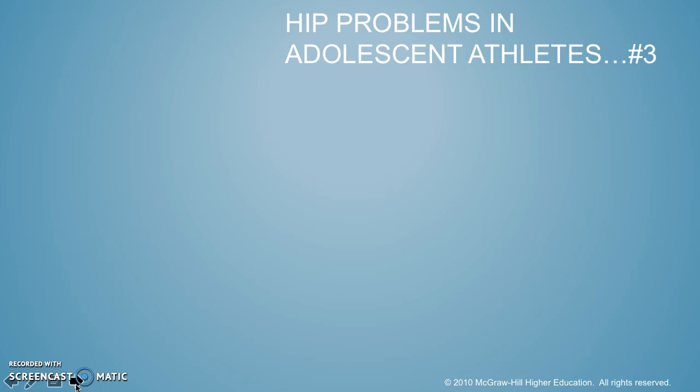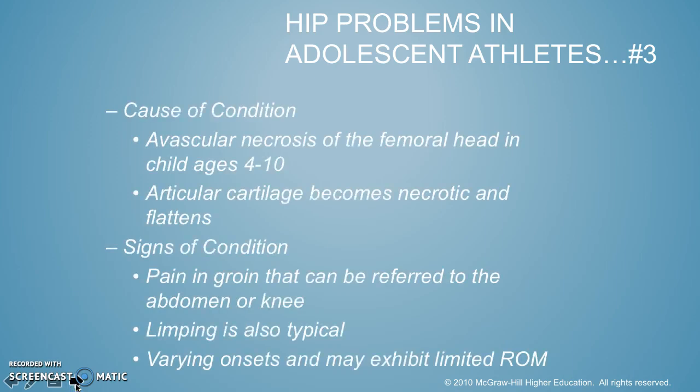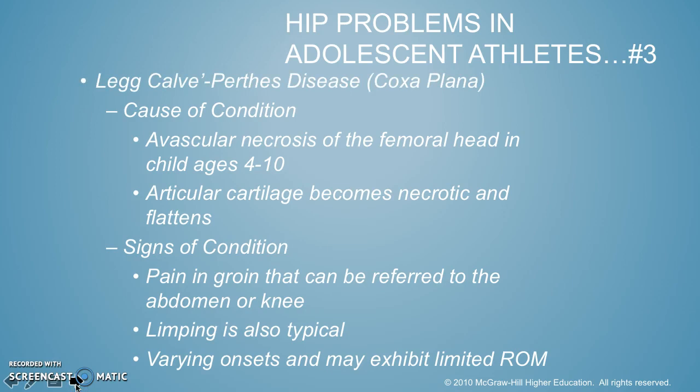Now, hip problems in adolescence — there are two main ones. The first one is called Legg-Calvé-Perthes disease. What happens here is avascular necrosis of the femoral head in children ages 4 to 10. Because of that avascular necrosis, their cartilage becomes necrotic — it dies and it flattens out. The pain is in the groin and can be referred up to the abdomen or down to the knee. They typically will have a limp and could have a limited range of motion.